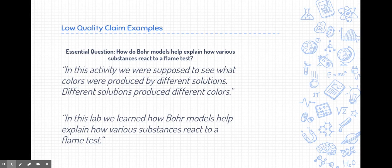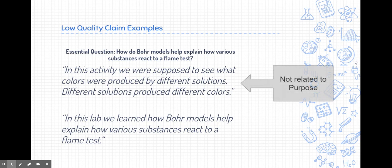I want to give you some examples of low-quality claims. Now, these were taken from previous labs that we've done. And I want to let you know right now that all of the examples I have in this presentation are not calling anybody out. In fact, a lot of people made similar mistakes. I didn't copy any one person. This was made by myself after what I've seen a lot of people do. Now, one of the labs we did was the flame test lab. And it says, how do Bohr models help explain how various substances react to a flame test? That was the essential question. In some examples of a claim, some people wrote, in this activity, we were supposed to see what colors were produced by different solutions. Different solutions produce different colors. The reason this is a low-quality claim is because it's not really related. It's not directly related to the purpose. It's what you did. But if you recall, the essential question or the purpose was to figure out how flame tests explain Bohr models. How Bohr models and flame tests relate to each other. And that's not mentioned here at all.